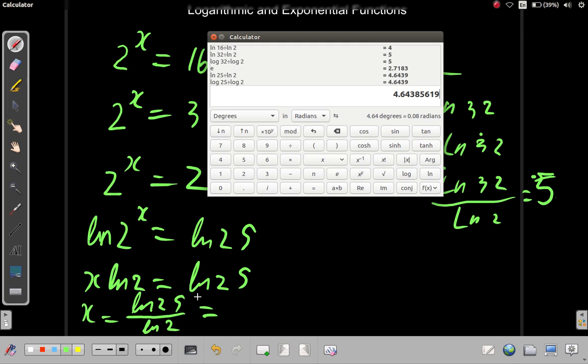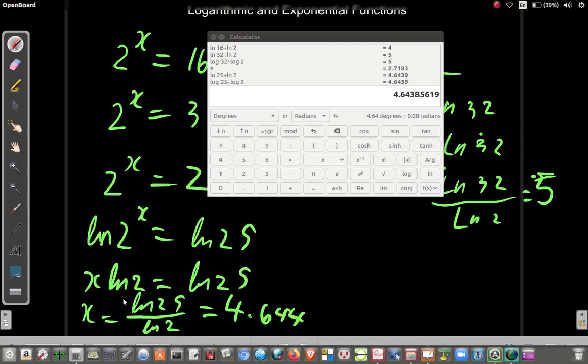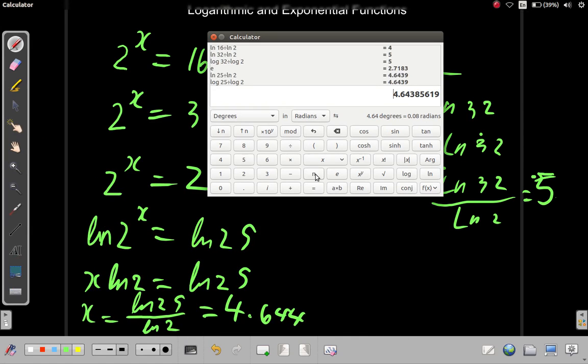So, let's write that down. 4.644. If you should raise 2 to the power of that, you'll get 25. Let's say you have 2 raised to the power of 4.64385619, as you see here, equals. You get 25.